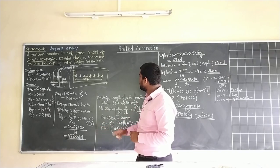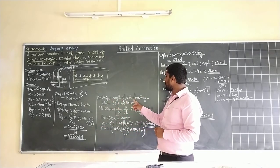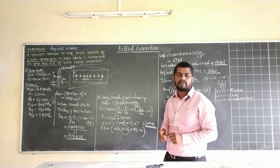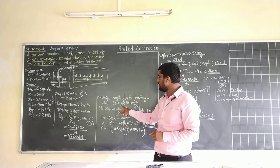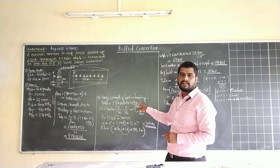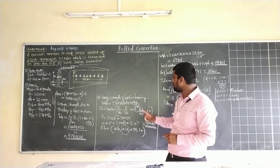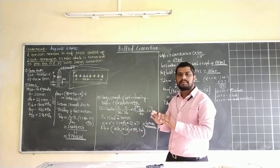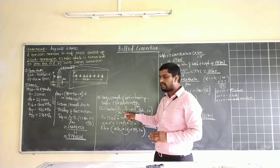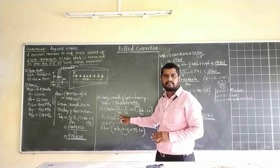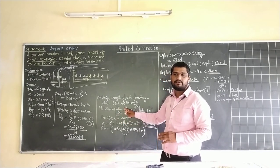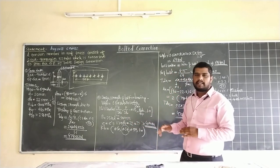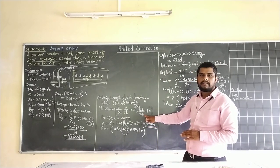Next step: determine design strength of bolt in bearing, V_dPB. Formula is 2.5 K_B D T F_UB divided by gamma_Mb. Find the value of constant K_B using smaller of: E divided by 3D_0, P divided by 3D_0 minus 0.25, F_UB divided by F_UP, and maximum 1.